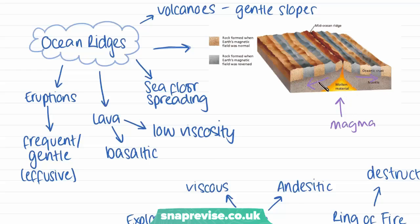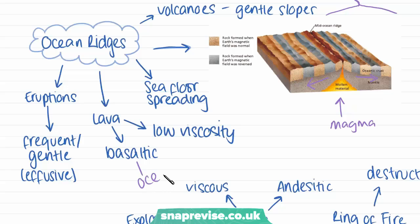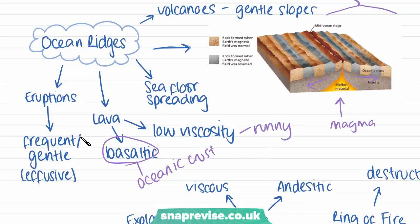These volcanoes have very particular characteristics. They don't have the classic volcano shape; they have much gentler slopes, because of the type of lava they are made of. Oceanic crust contains a rock called basalt, which makes the lava basaltic. This type of lava has a low viscosity, which means it's quite runny. This means that the eruptions aren't explosive — they're more frequent and gentle — and that is the type of volcano we get at ocean ridges.